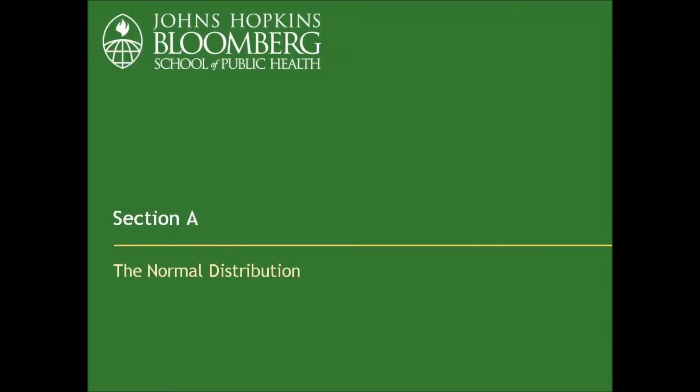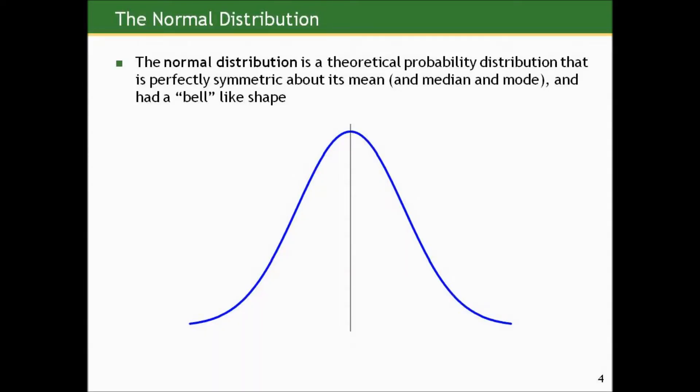Let's get started with the normal distribution. Many of you probably don't need an introduction to the normal distribution, but just to make sure we're all on the same page. It's what we call a theoretical probability distribution, something at the population level that describes the distribution of values in this theoretical population.